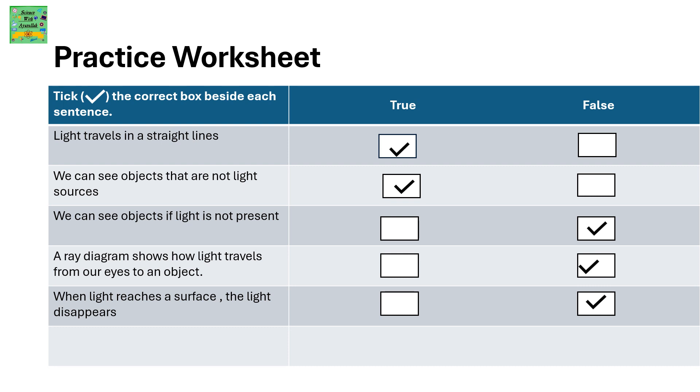Practice worksheet. Tick the correct box beside each sentence. Light travels in straight lines. True. We can see objects that are not the light sources. True.